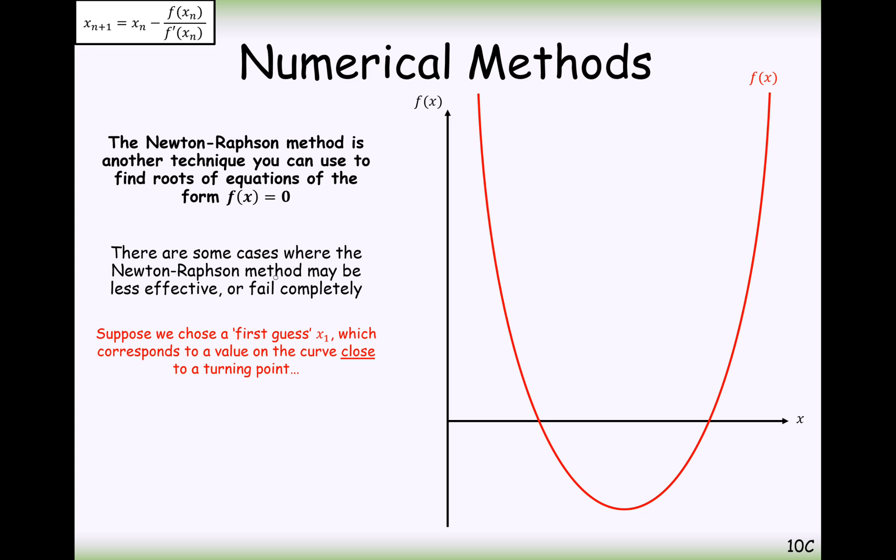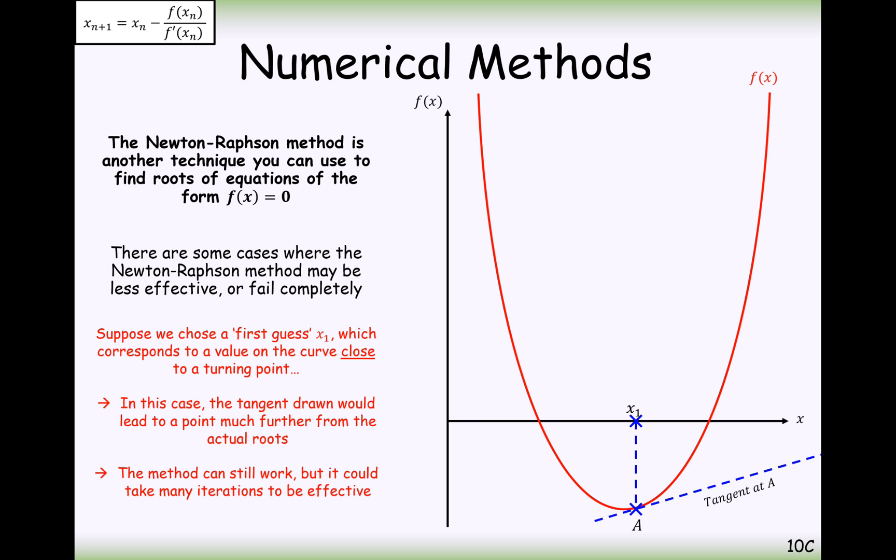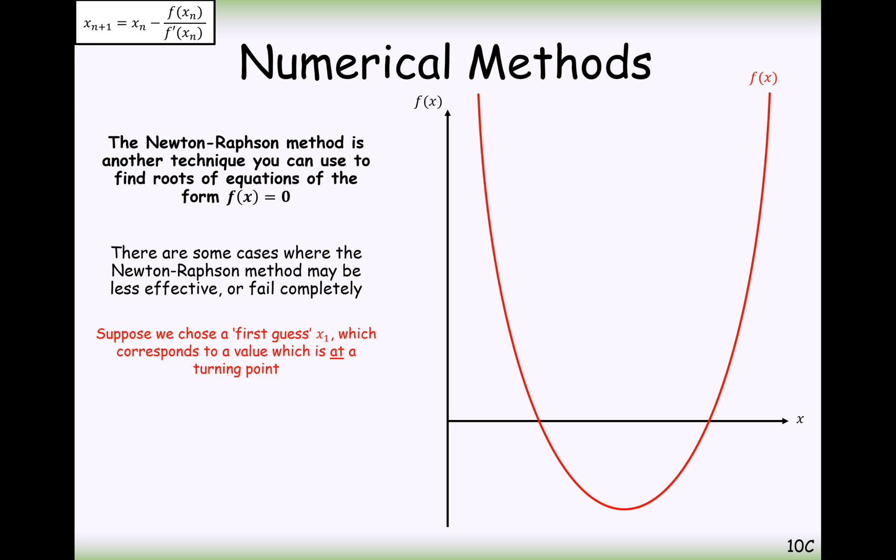So there are some cases in Newton-Raphson where the method is less effective or it might, in fact, completely fail. Suppose that our first guess, x₁, was either on the stationary point or quite close to the stationary point. In this case, drawing the tangent would lead the point much further away from the root. If you can imagine the tangent being drawn here, it's going to be way off the screen. It's going to be less effective. So trying to estimate where the turning point is going to be and moving as far away or as closer to the root as possible is going to be better for us. The method can still work, but it might take a few iterations and it won't be as effective.